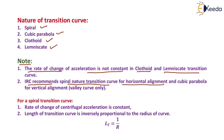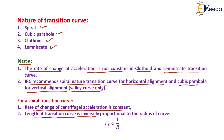IRC recommends a spiral nature transition curve for horizontal alignment and cubic parabola for vertical alignment. This is very important from the GATE exam point of view. For a transition curve, the rate of change of centrifugal acceleration is constant, and the length of the transition curve LT is inversely proportional to the radius of the curve.